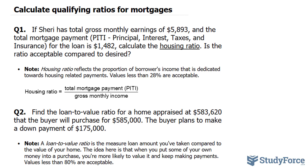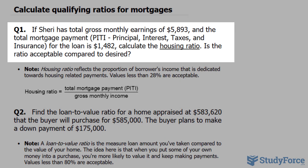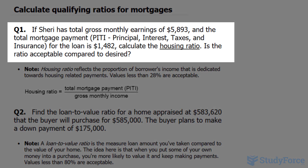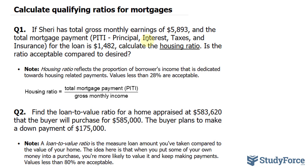We'll start with question number one, which deals with housing ratio. The question reads: if Sherry has total gross monthly earnings of $5,893 and the total mortgage payment — which the formula refers to as PITI, that's principal, interest, taxes and insurance — for the loan is $1,482, calculate the housing ratio. Is the ratio acceptable compared to what's desired?